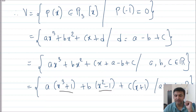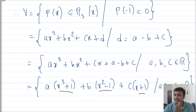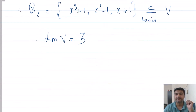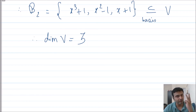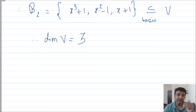This gives three polynomials: (x³ + 1), (x² − 1), and (x + 1). These are again linearly independent — you can verify by setting c₁(x³+1) + c₂(x²−1) + c₃(x+1) = 0 and comparing coefficients, which forces all cᵢ = 0. Therefore this set forms a basis for V, and the dimension of V is also 3.